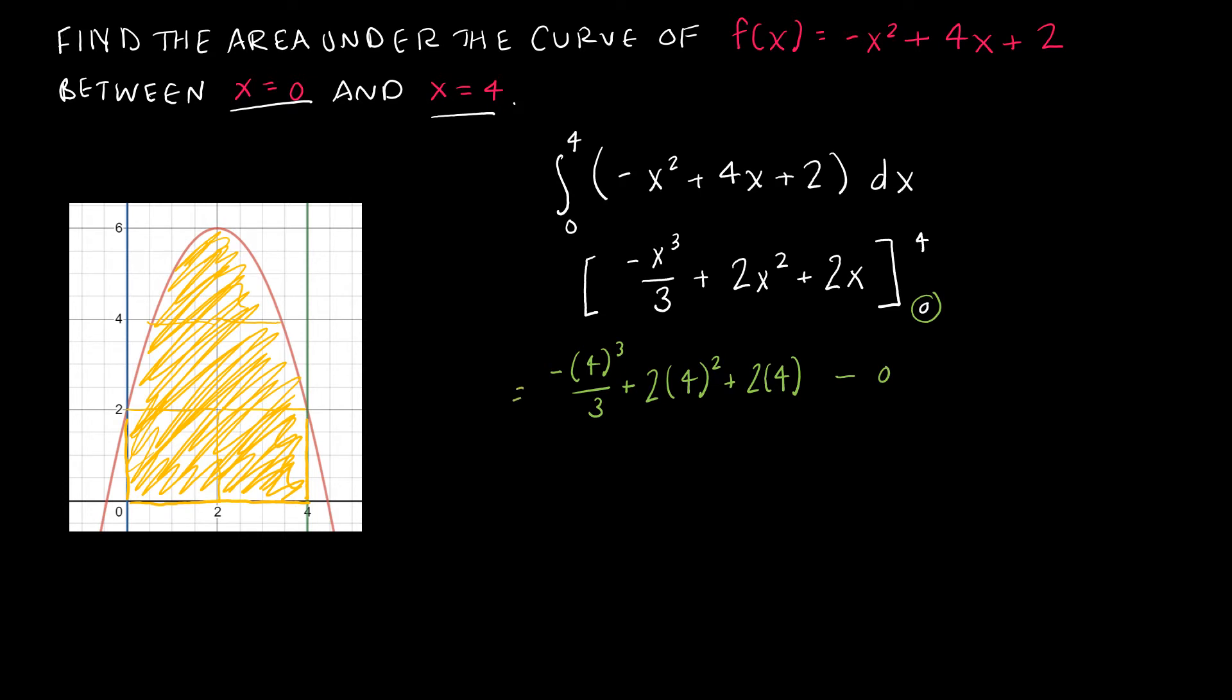So my solution is going to be basically me evaluating this expression. So the area: 4³ is 64, so I have -64/3. 4² is 16 times 2 is 32, plus 2 times 4 is 8, again minus 0.